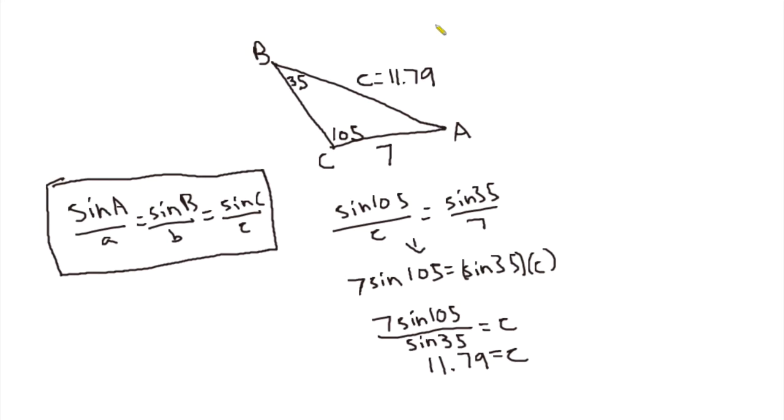Now the only variation you might see is you might need to find the angle. You might have two sides, one angle, and the fourth value is a variable, an angle that is a variable. So you would do the same thing you did here. But what you're going to end up with is something like sine x equals some value like 2.3. And at this point, you just need to remember to use arcsine.